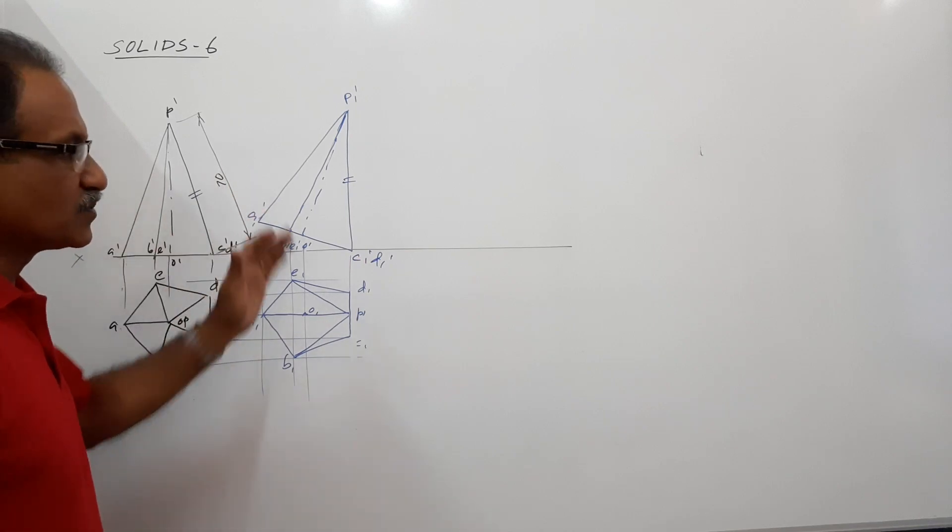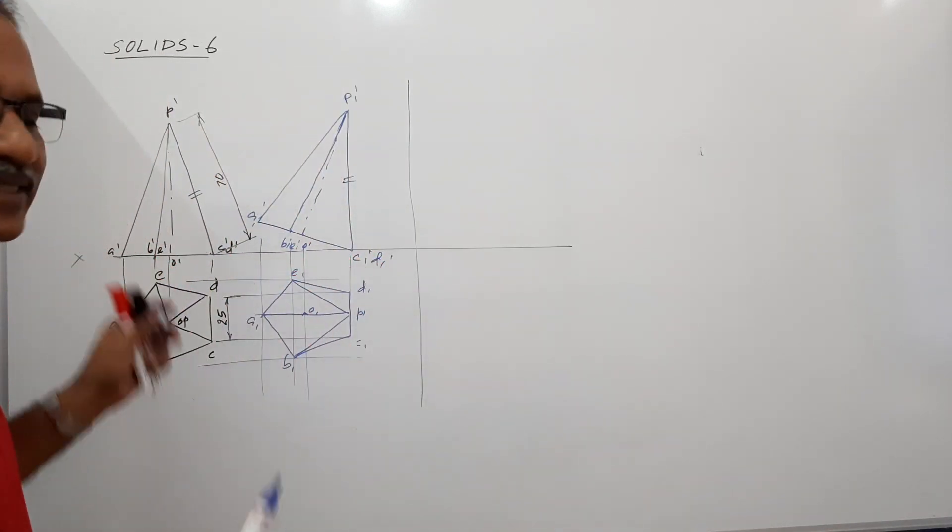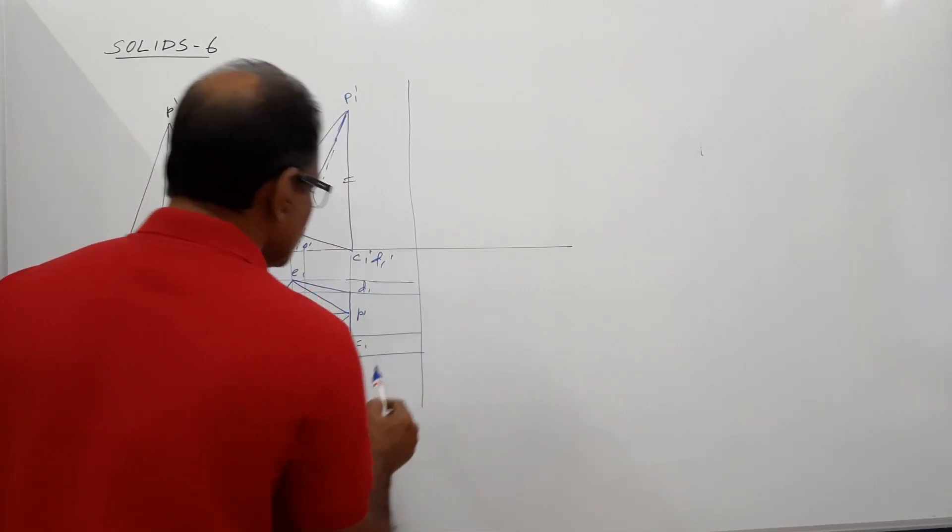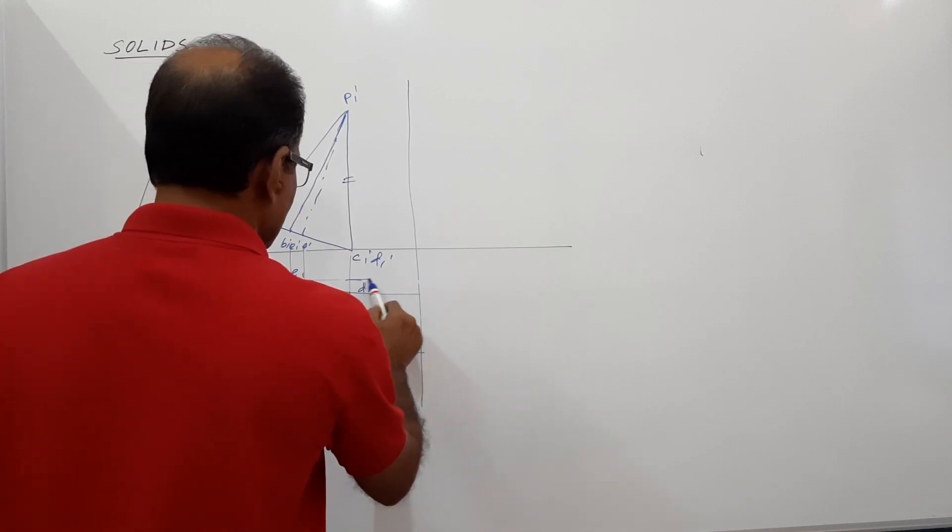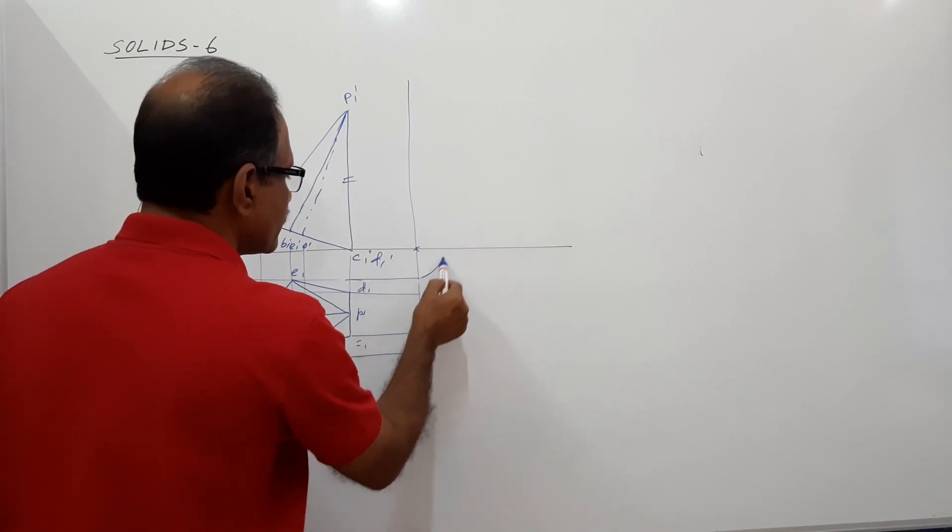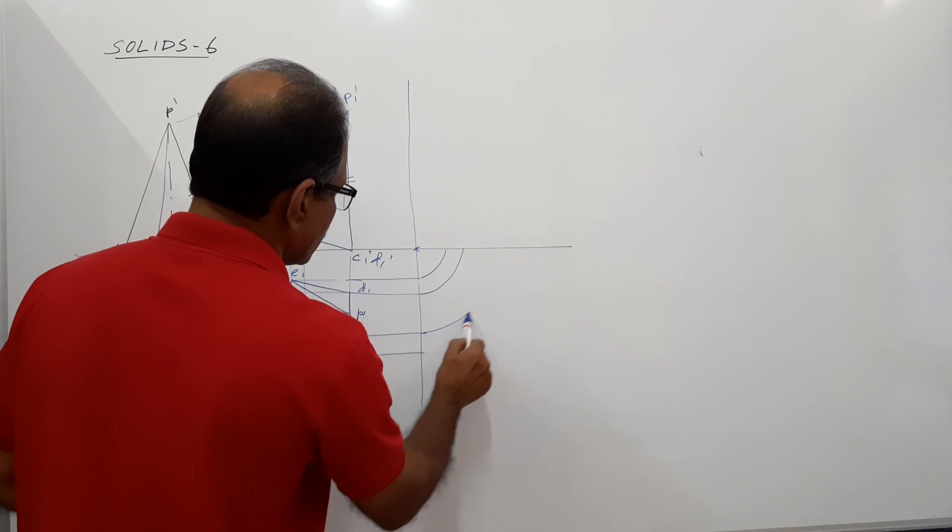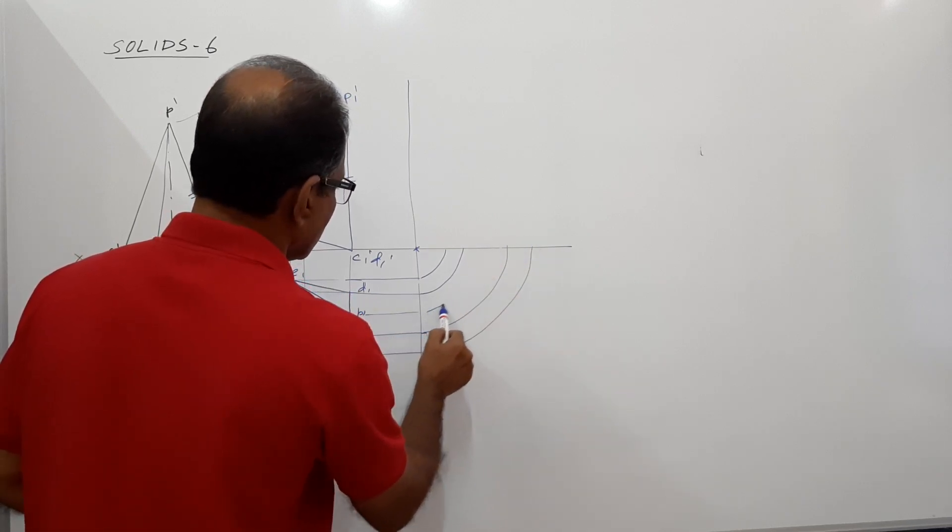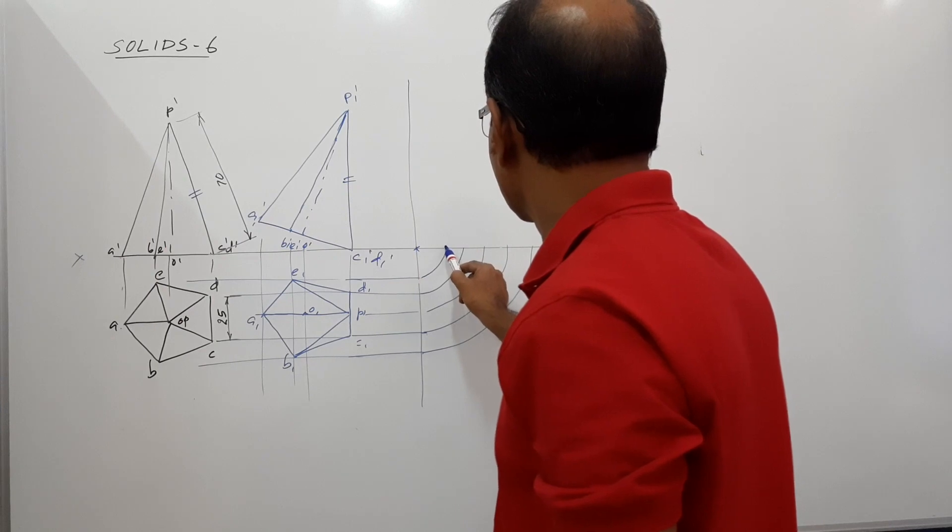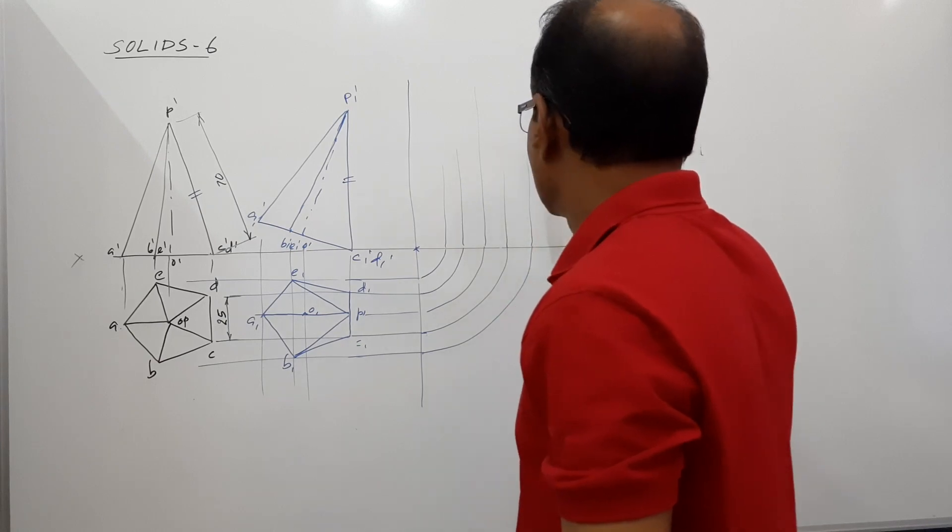Now we have to draw an end view, view from this side. For that we will draw an X1Y1 here, or a vertical line here similar to an XY line. Project all these points to that. Then this as center and these as radii draw arcs. Draw vertical lines through them, draw horizontal lines through them.